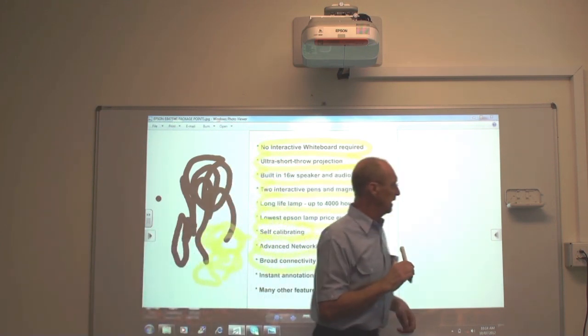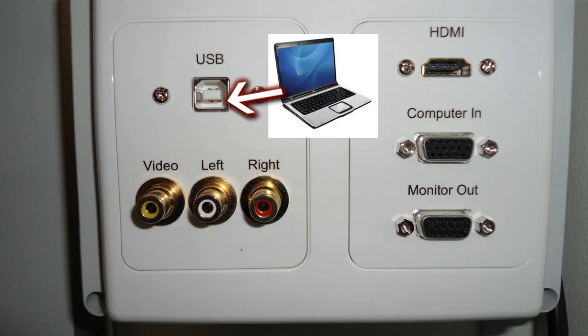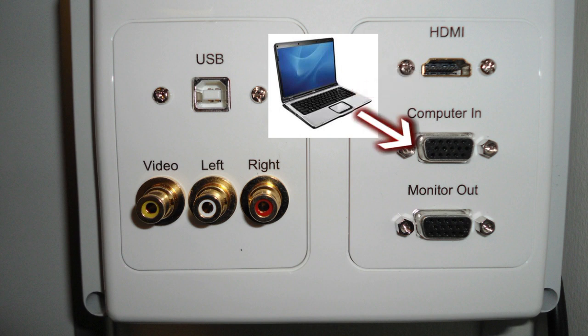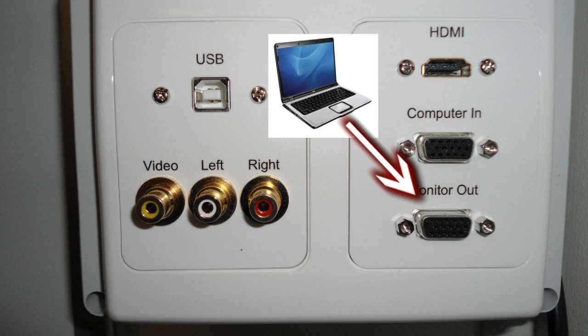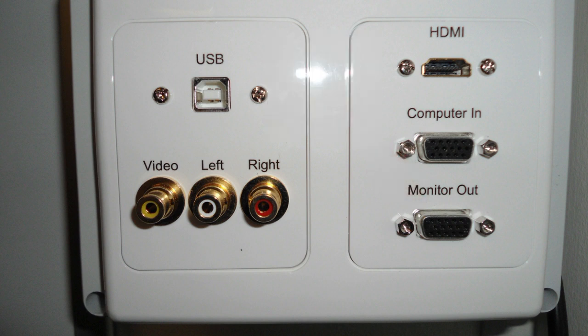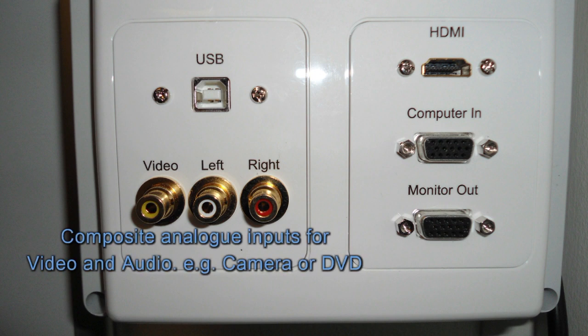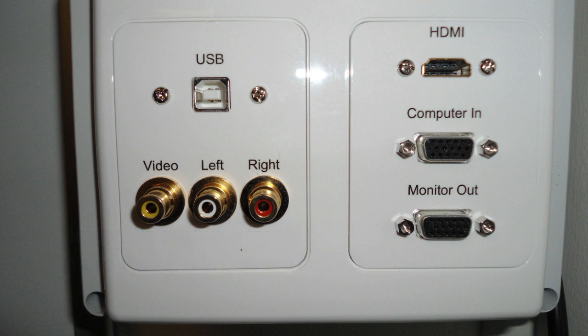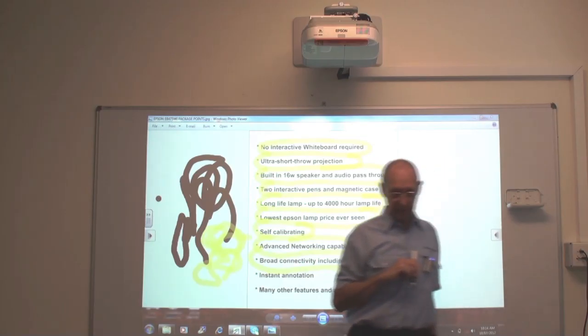In this installation we install USB, HDMI, which will give you audio and video, VGA input for your picture, and monitor out to get a signal back to your monitor on your computer if you have a desktop. You've got composite audio and video. And that's it for standard units. But you have many other options as well.